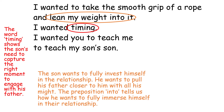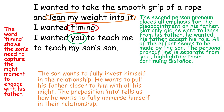He then says, 'I wanted you to teach me to teach my son's son,' and you'll notice lots of repetition in that final line. If we focus on the use of pronouns, the second person pronoun 'you' places all emphasis for the disappointment on his father. Not only did he want to learn from his father, he wanted his father to accept his role — he wanted his dad to be his dad. All of the effort seems to be made by the son. The personal pronoun 'me' is kept separate from 'you,' highlighting their continuing distance. Linking to 'From Father to Son,' Humphreys finds it really difficult to use the word 'me' — that personal pronoun is very often replaced with 'you,' signifying their distance. Here, the use of 'you' and 'me' kept apart highlights the distance that these two men tragically couldn't close.